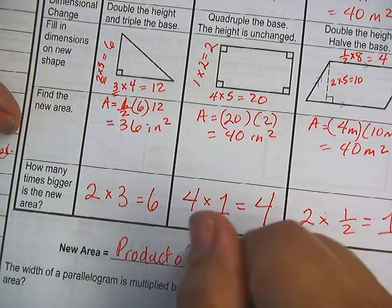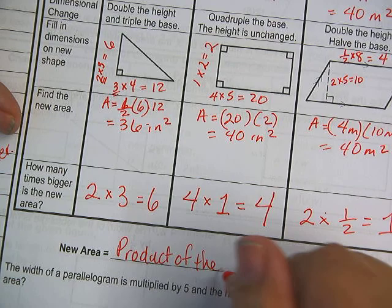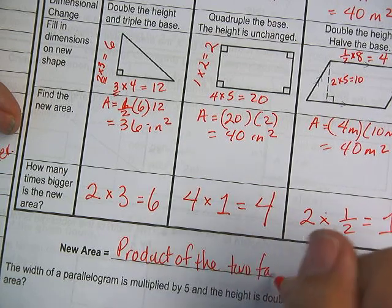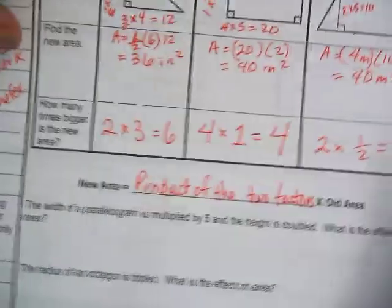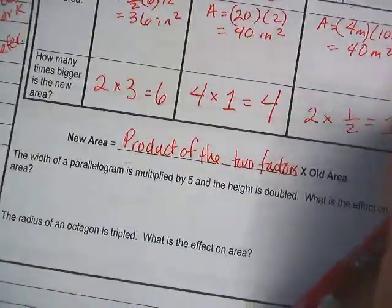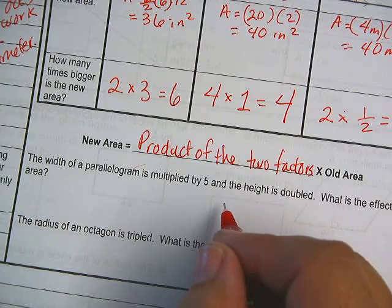But for area, hopefully you're noticing, if I take the product of the two factors and multiply that by the old area, that gives me the new area.